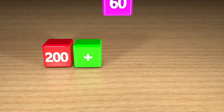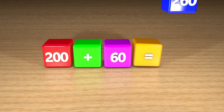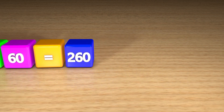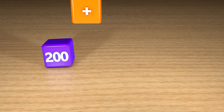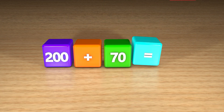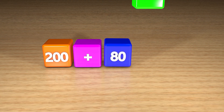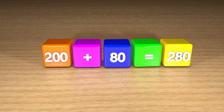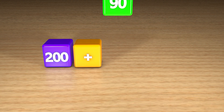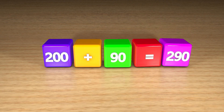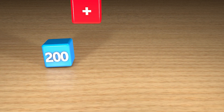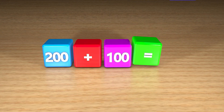200 plus 60 equals 260. 200 plus 70 equals 270. 200 plus 80 equals 280. 200 plus 90 equals 290. 200 plus 100 equals 300.